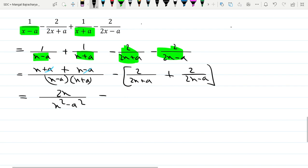Now the back of the vector is LCD same fraction. So we take LCD 2x plus a into 2x minus a.